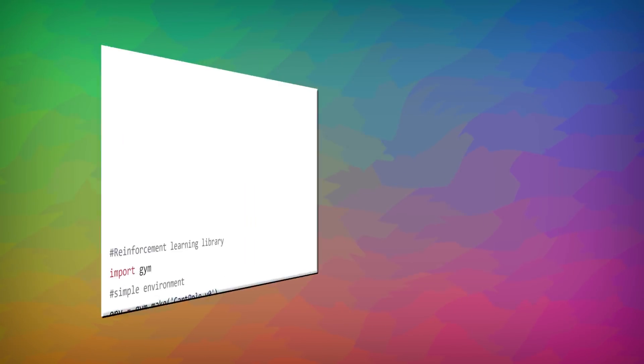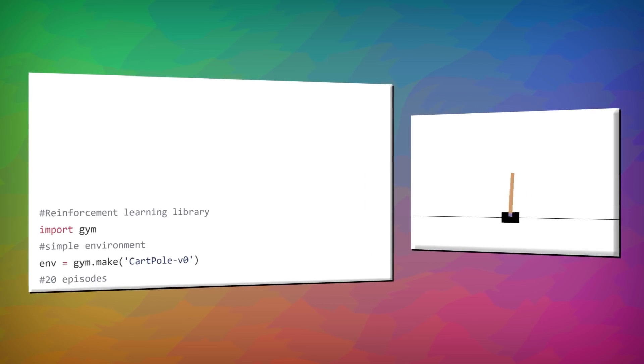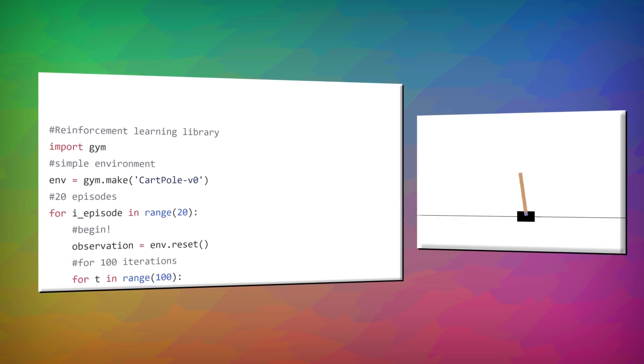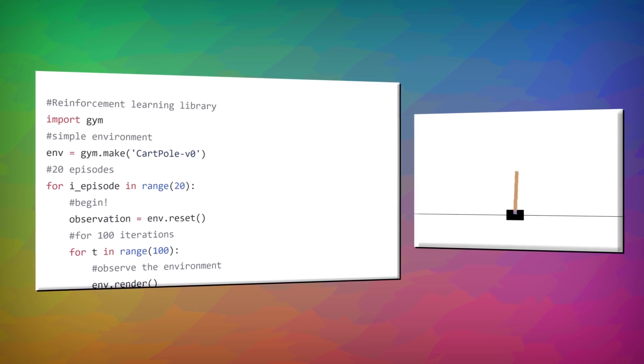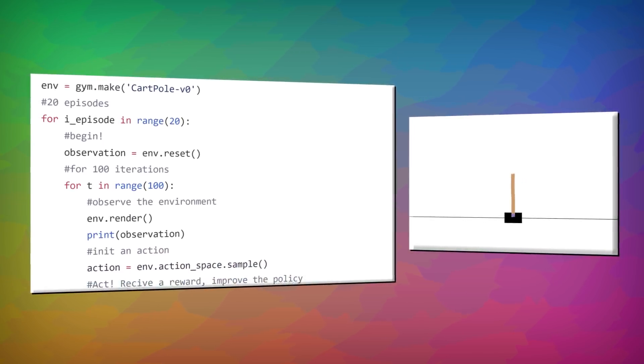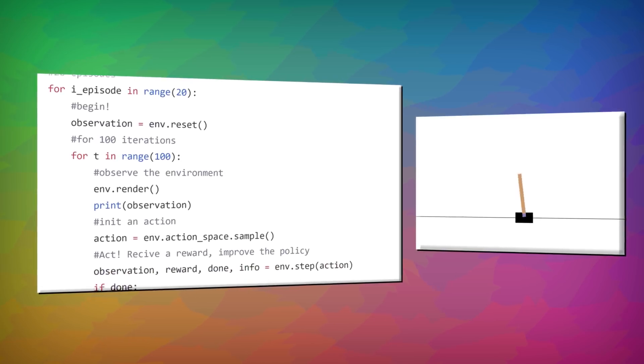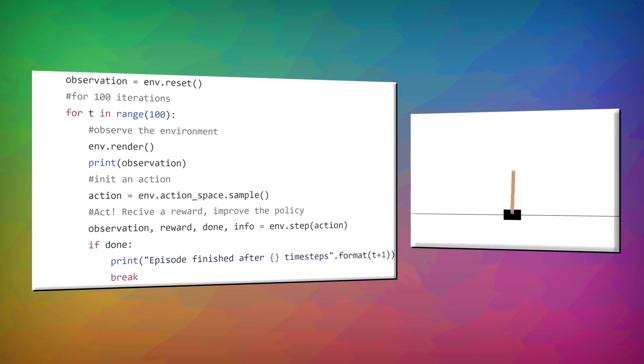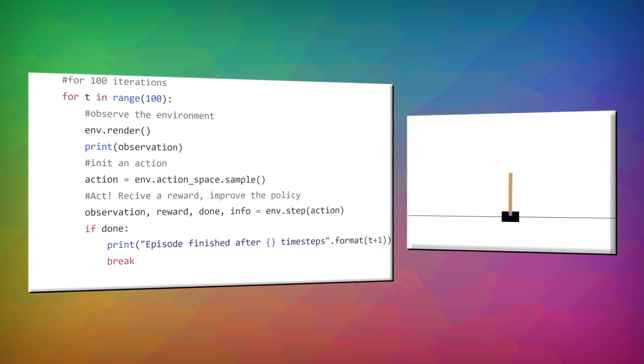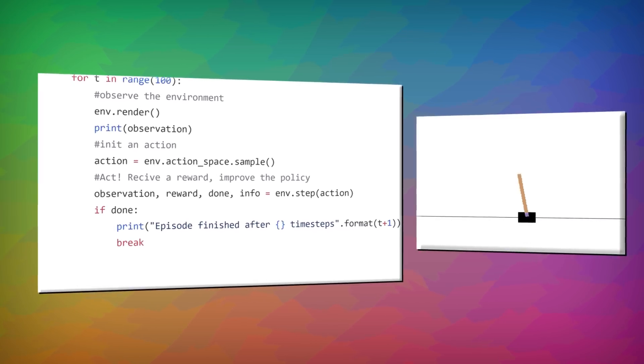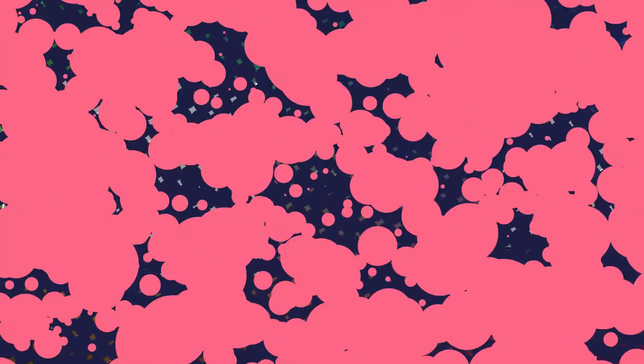We need to define the action value function before talking about how the agent can search for an optimal policy. The main idea is that the agent interacts with the environment, and from this interaction, it estimates the optimal action value function. The agent will then use that action value function to compute the optimal policy. Once we have the optimal action value function, we can construct the optimal policy. For each state, we need to pick the action that yields the highest expected return. If we follow the maximum action values for each state, we'll quickly find the optimal policy.